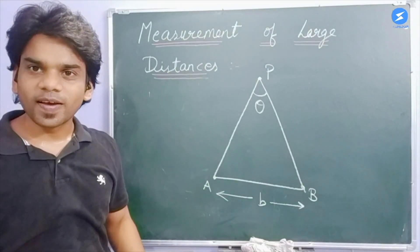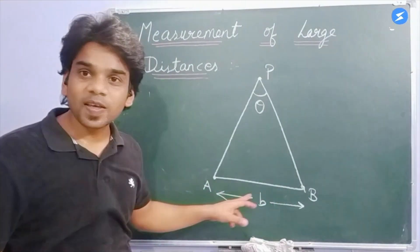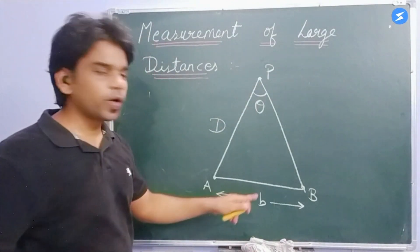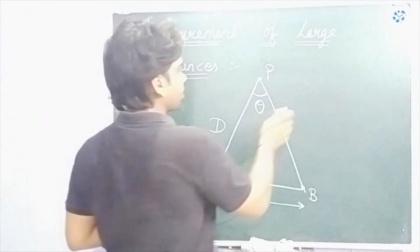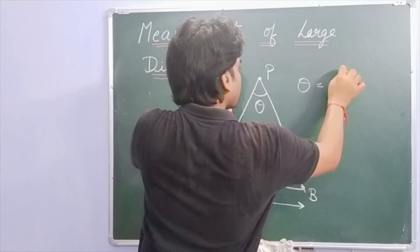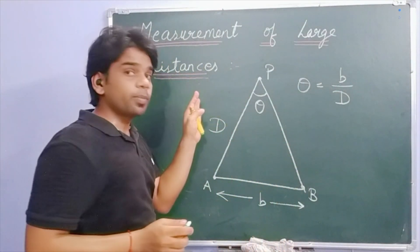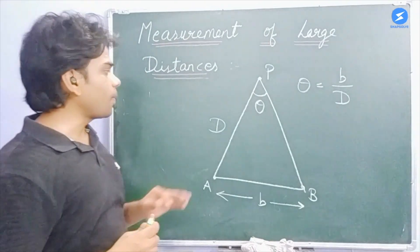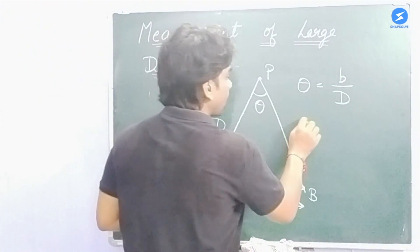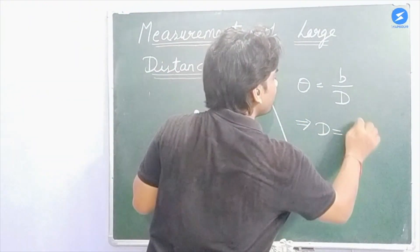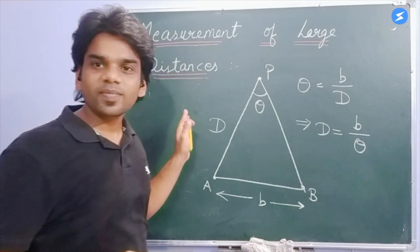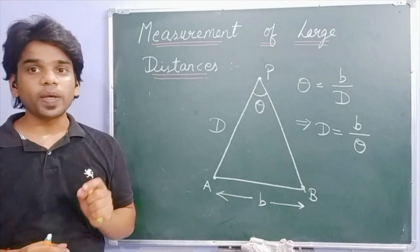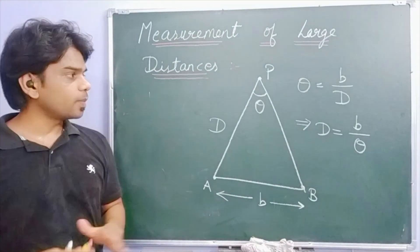The planet is very far, so D is very large and the base B is very small. Using the small angle approximation, the parallax angle theta equals B divided by D. So we can find the distance D equals B divided by theta. Remember that theta has to be measured in radians. This is how we measure large distances.